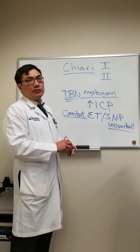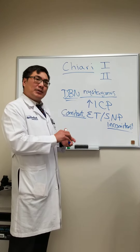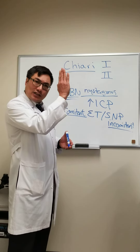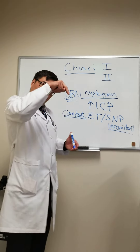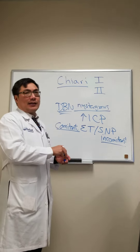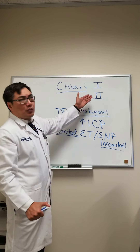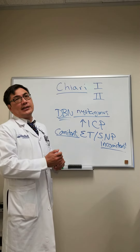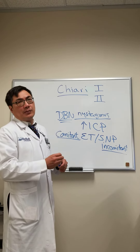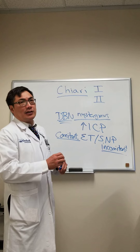The best imaging is the sagittal cut to look for tonsillar descent at the level of the foramen magnum. If there is more severe descent of the posterior fossa contents, that is called the Chiari 2.